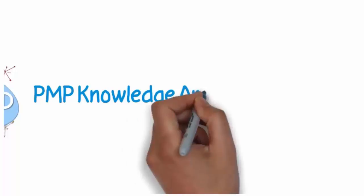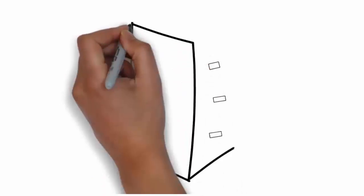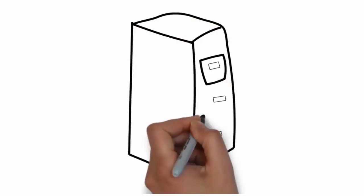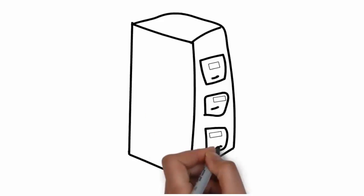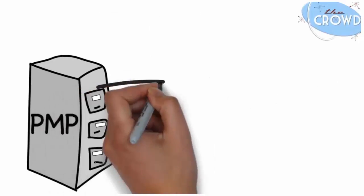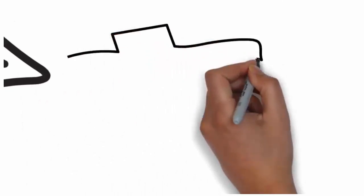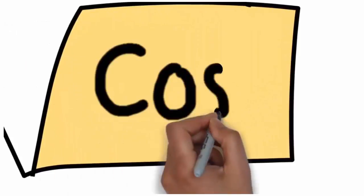Here is the crowd — me — and this is my PMP knowledge area drawn out for the knowledge area of cost management. Like all the knowledge areas, we have a general project management plan, and I like to use the symbolism of a file cabinet to represent our project management plan, or PMP for short. Within this file drawer is the knowledge area of cost. This drawing is for the area of cost management and the processes that lie within it.